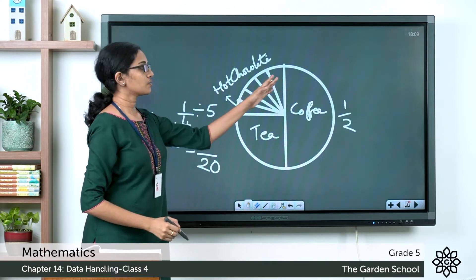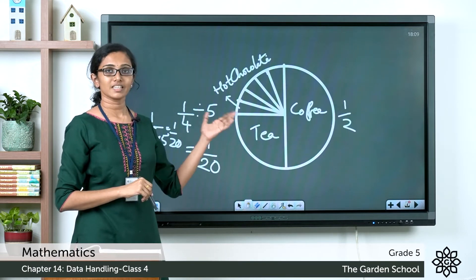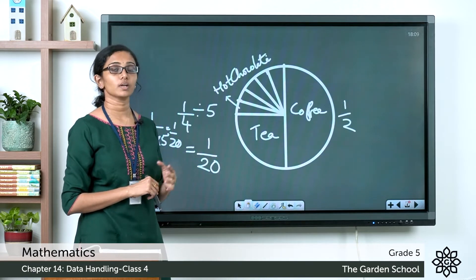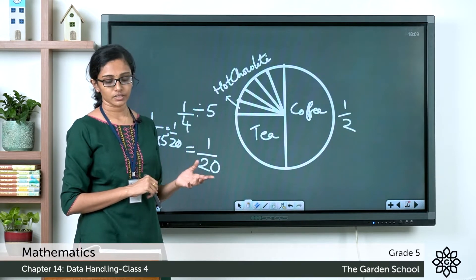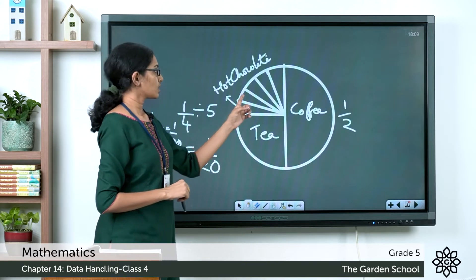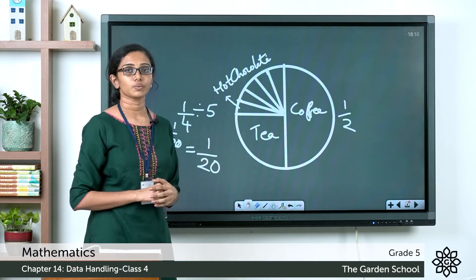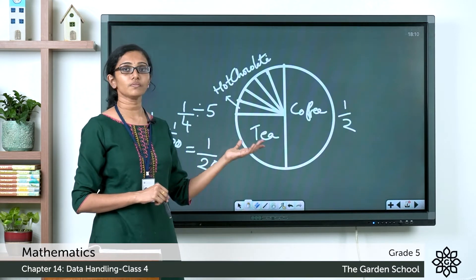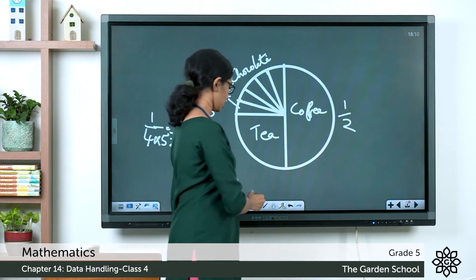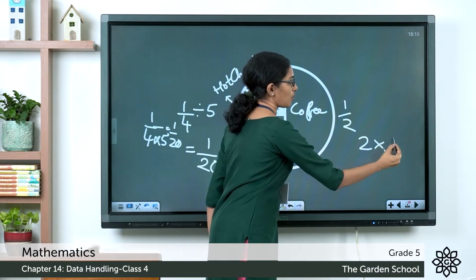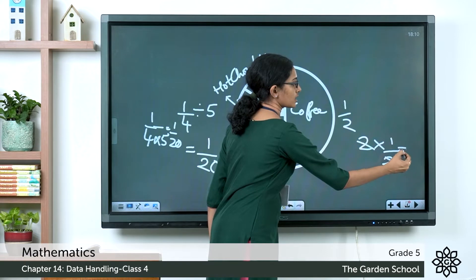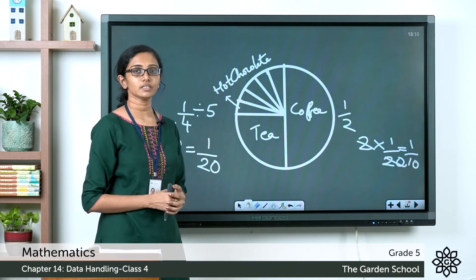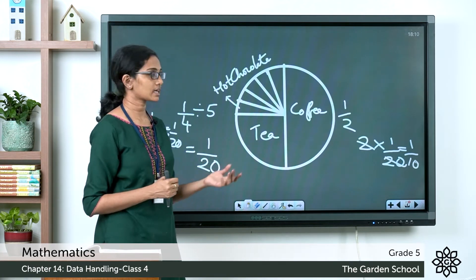We are left with four sectors of 1/20 to represent milk and shake. The fraction for milk is 1/10. Since each sector is 1/20, two sectors of 1/20 make 1/10. So combine two 1/20 sectors to represent milk, giving one 1/10 sector.